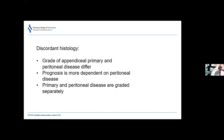Discordant histology can occur — the grade of the appendiceal primary and the peritoneal disease may differ. Prognosis is more dependent on the peritoneal disease, so the primary and the peritoneal disease are graded separately. This is clearly set out in the reporting proforma dataset. This is unusual compared to other body sites in oncology, but reflects the peculiar nature of pseudomyxoma peritonei.